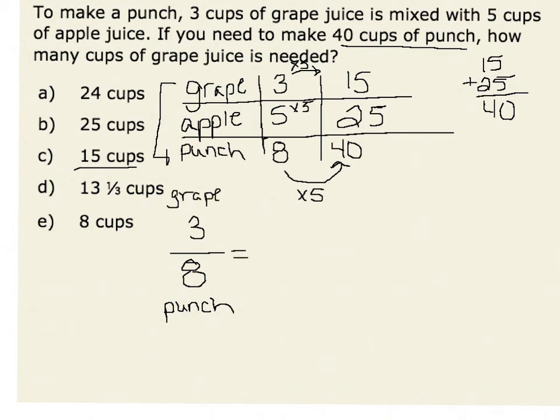I know I want an equivalent ratio where I need to determine the amount of grape juice when I have 40 total cups of punch. Since these are equivalent ratios, I know that in order to get my denominator of eight to a denominator of 40, I have to multiply by five.